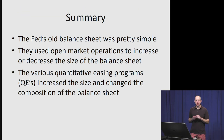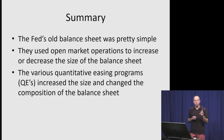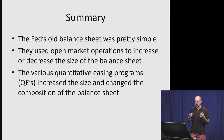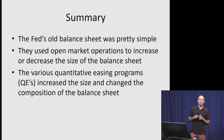In summary, the Fed's balance sheet for policy purposes used to be exceptionally simple — mostly Treasury bills with a small volume of discount loans. They would use open market operations to increase or decrease the size of their balance sheet. As we'll see, the quantitative easing programs dramatically increased the size of the Fed's balance sheet and also very dramatically changed its composition. Thank you all very much.